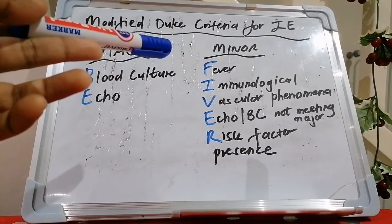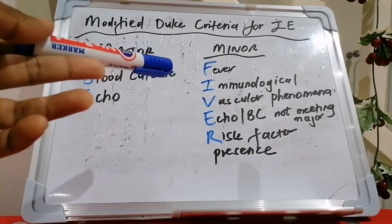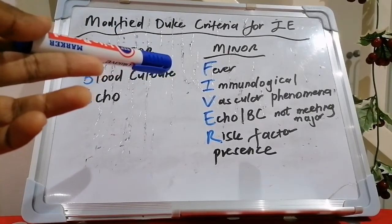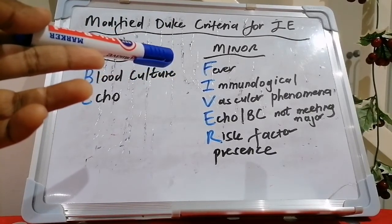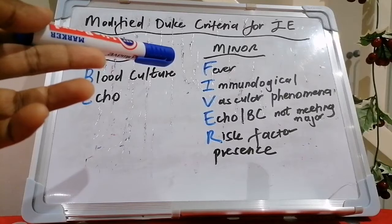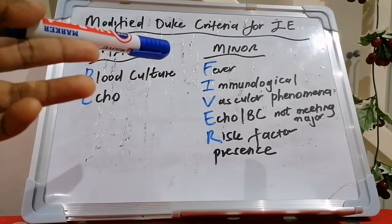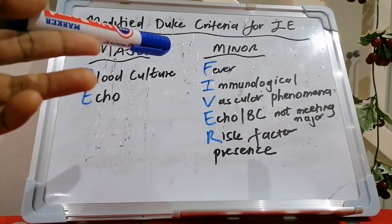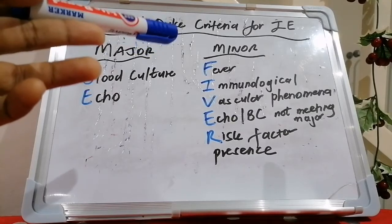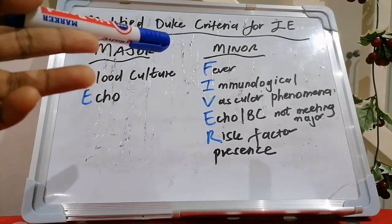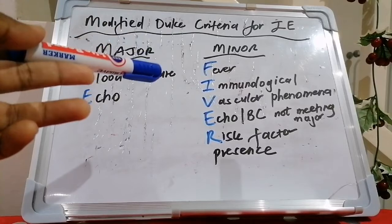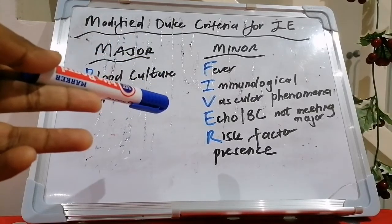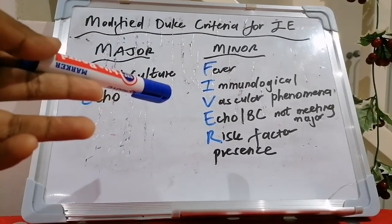V stands for vascular phenomena, including those detected by imaging only — major arterial emboli, septic pulmonary infarcts, mycotic aneurysms, intracranial hemorrhage, conjunctival hemorrhages, and Janeway lesions.